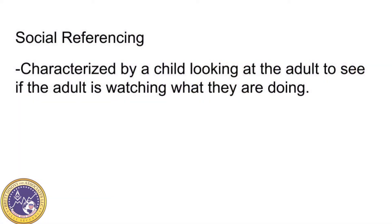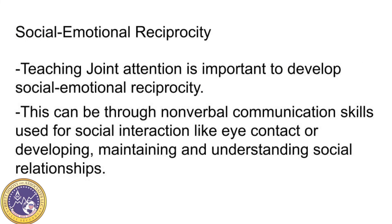Joint attention should not be confused with social referencing. Social referencing is characterized by a child looking at an adult to see if the adult is watching what they're doing. It's important to teach joint attention to develop social emotional reciprocity like conversation, nonverbal communication skills used for social interactions like eye contact, and developing, maintaining, and understanding social relationships. This is an important body of research because through behavior analysis, practitioners can teach joint attention responses in children with autism, which may lead to increased social communication skills and shared responses.